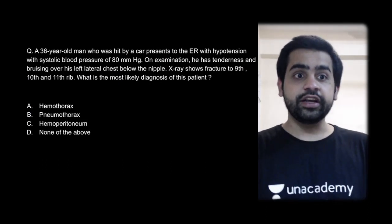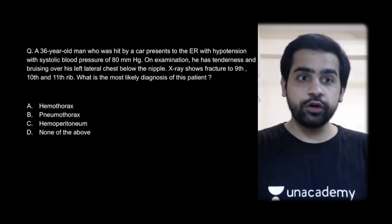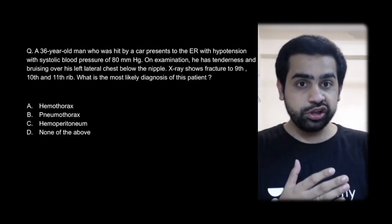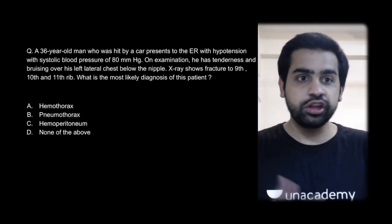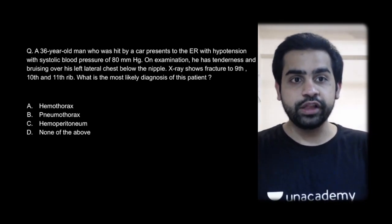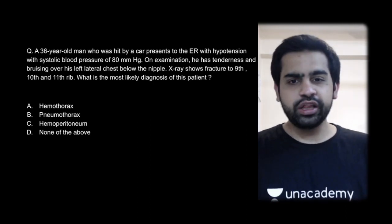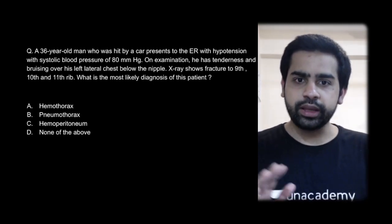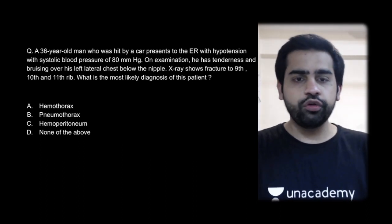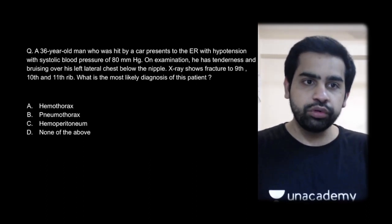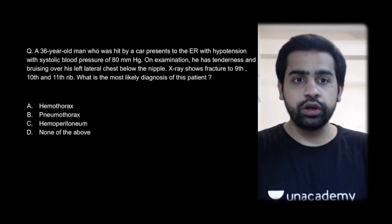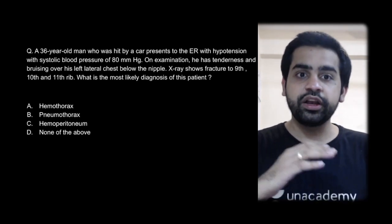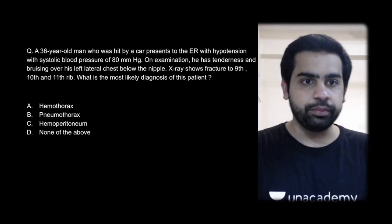The first question: there is a 35-year-old man who has been hit by a car and brought to the emergency room with hypotension — systolic blood pressure less than 80 mmHg. The patient is hemodynamically unstable. On examination, there is tenderness and bruising on the left lateral chest wall below the nipples, and the X-ray shows fractures of the 9th, 10th, and 11th rib.